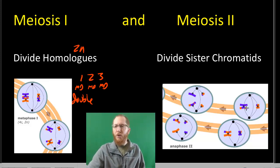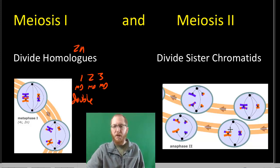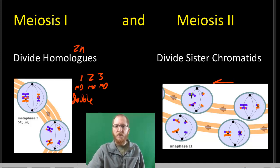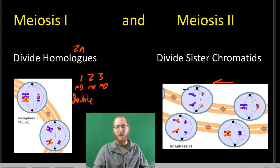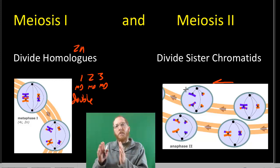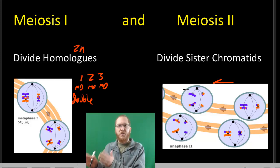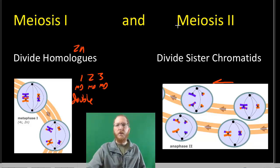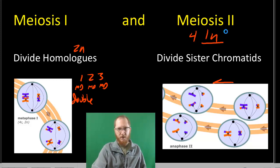In meiosis 2, we line up the chromosomes we have and split the sister chromatids, leaving us with just individual chromatids — which we call chromosomes once they split. So: meiosis 1 divides the homologous chromosomes; meiosis 2 divides the sister chromatids. The overall result is four 1N cells that we call sex cells or gametes.